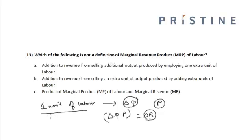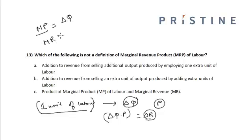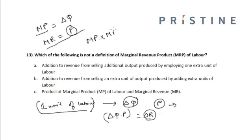The marginal product of labor (MP) is the additional output produced by one more unit of labor, so MP = ΔQ. The marginal revenue (MR) is the addition to revenue from selling one additional unit of output, so MR = P, assuming the firm sells all output at the constant price P. Therefore, MP × MR = ΔQ × P, which equals the marginal revenue product of labor.